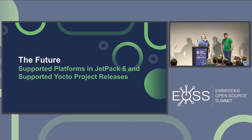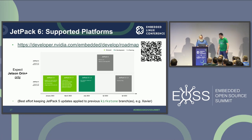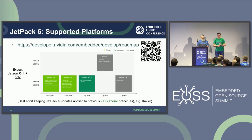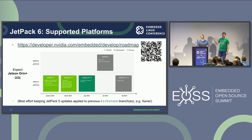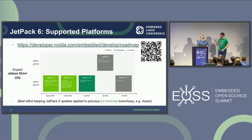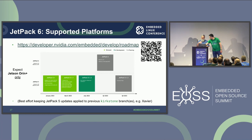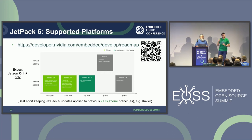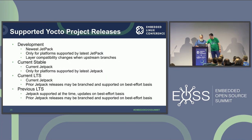Now let's talk about the future. We're expecting Jetpack 6 in Q3. The changes may be minimal — moving from kernel 5.10 to 5.15 and Ubuntu from 20.04 to 22.04. We will keep Jetpack 5 up to date mainly on security fixes on the Kirkstone branch. As we move forward, master will only be on Jetpack 6 and the latest stable release will also be Jetpack 6. One more important thing: in Jetpack 6 we will support only Orin. Xavier will be dropped — that is NVIDIA's choice, not ours. Please make sure you are keeping current with the hardware.